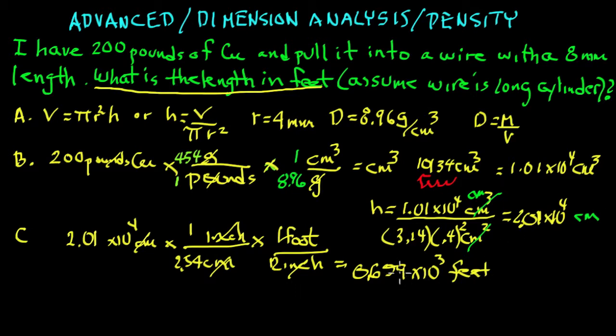I come out with 0.659 times 10 to the 3 feet. 0.659, that becomes 0.659 times 10 to the minus 3 times 10 to the 3 becomes 10 to the 0. Follow that.